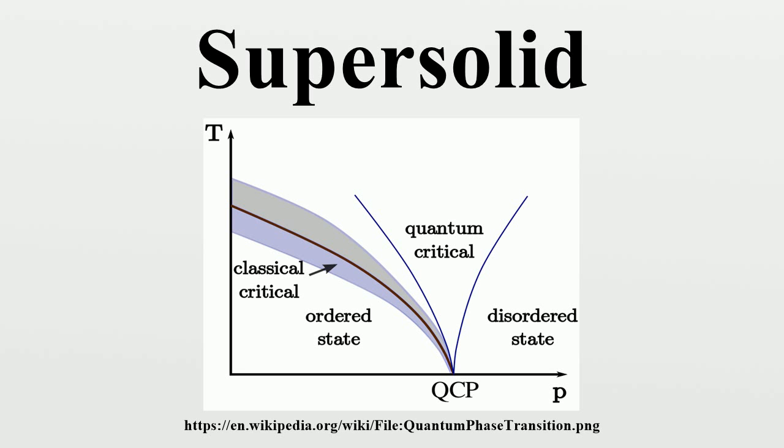While several experiments yielded negative results in the 1980s, John Goodkind from UCSD discovered the first anomaly in a solid by using ultrasound. Inspired by his observation, Yoon Siung Kim and Moses Chan at Pennsylvania State University saw phenomena which were interpreted as supersolid behavior.